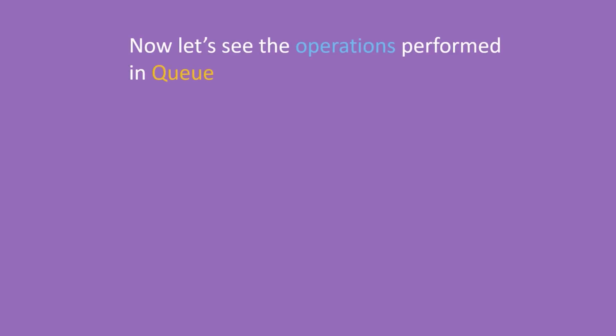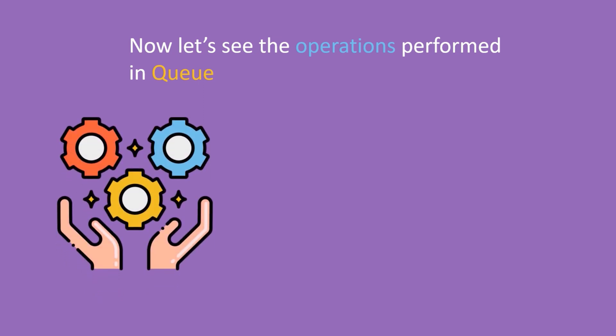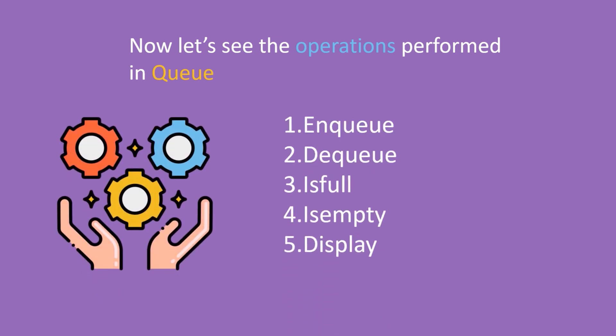Now let's see the operations performed in a queue. The operations are: enqueue, which is also known as insertion; dequeue, which is also known as deletion; is full, which we use to check whether the queue is full or not; is empty, which we use to check whether the queue is empty or not; and display, to display the elements inside the queue.